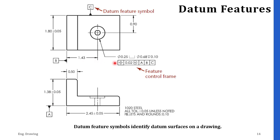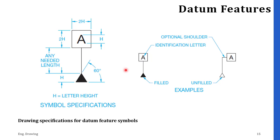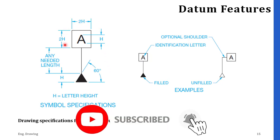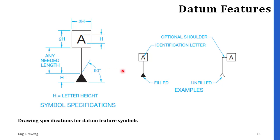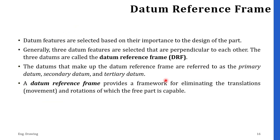You can see some specifications for the datum feature control frame. When drawing a datum feature on your drawing, keep in mind these dimension values — these values are according to the ASME Y14.5 standard. You can see both filled and unfilled styles, but preferably the filled style is better. Datum reference frame: datum features are selected based on the importance of the design of the part. Generally, three datum features are selected that are perpendicular to each other, forming what is called the datum reference frame or DRF. The datums that make up the DRF are also known as the primary, secondary, and tertiary datums.